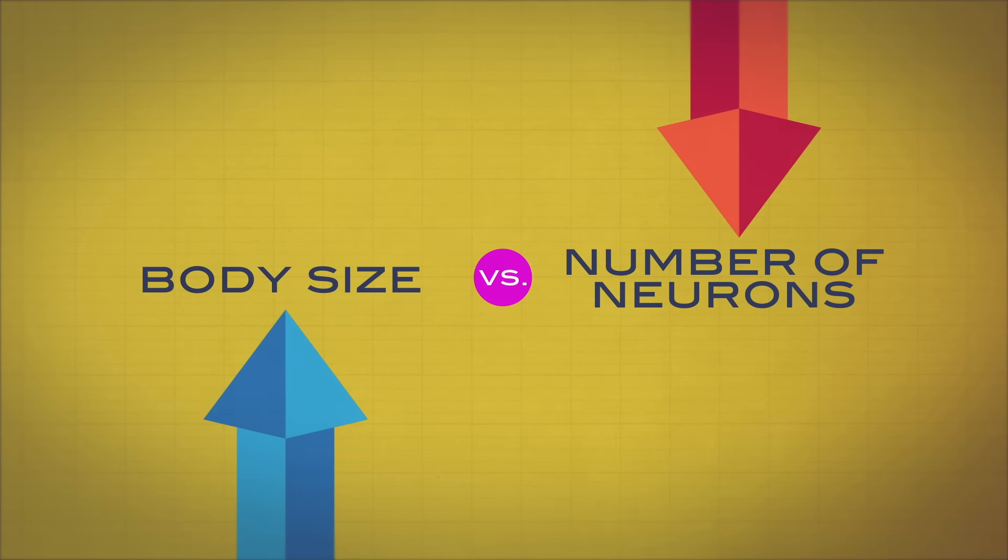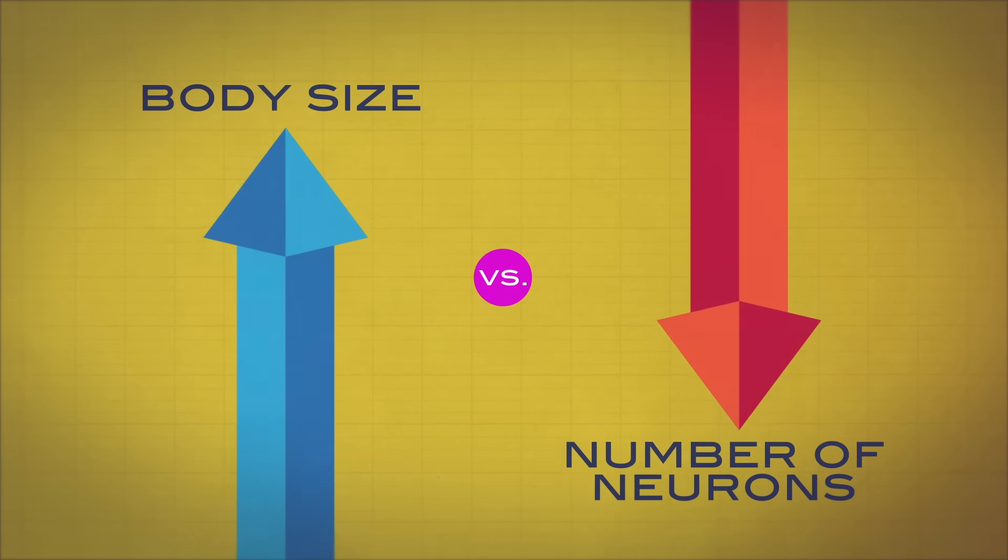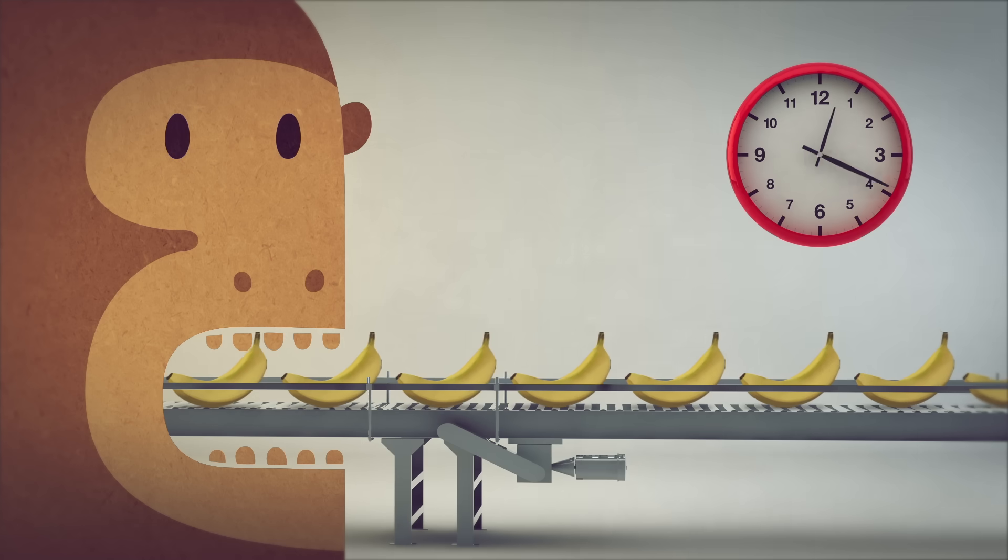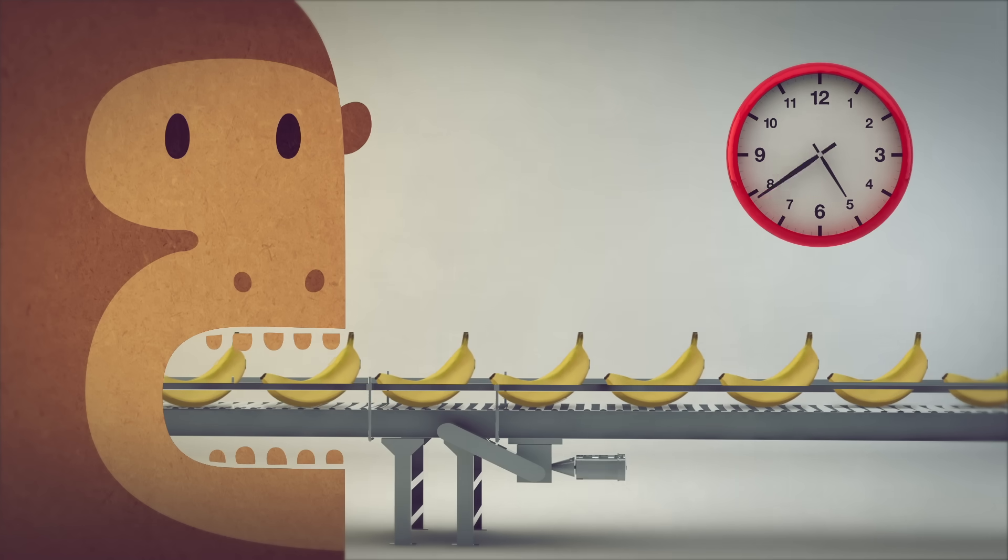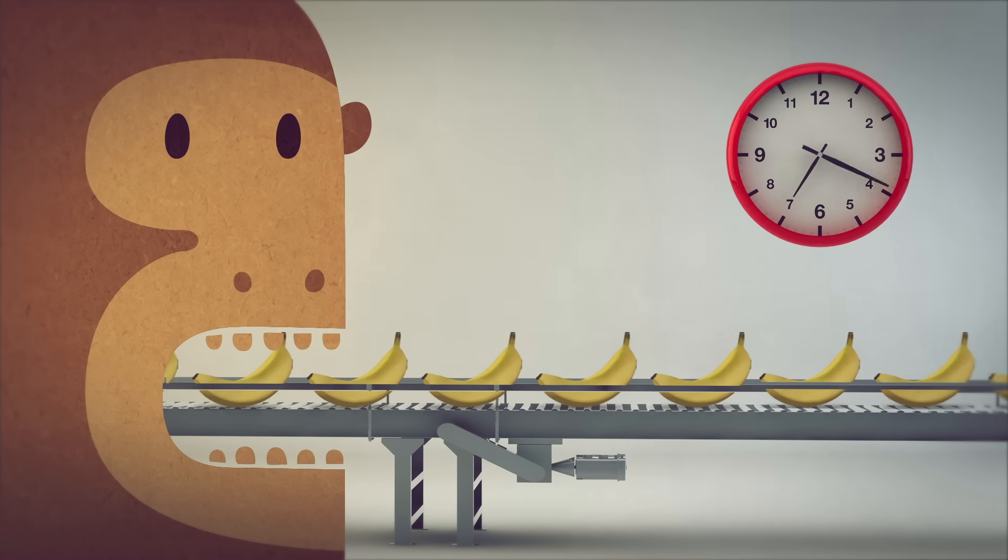There is a trade-off between body size and the number of neurons a primate, including us, can sustain. A 25-kilogram ape has to eat eight hours a day to uphold a brain with 53 billion neurons.